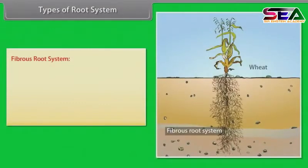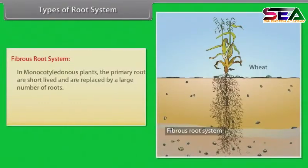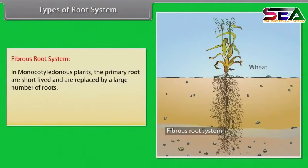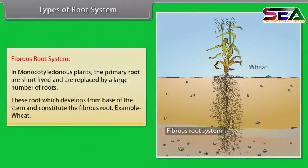Fibrous root system. In monocotyledonous plants, the primary roots are short-lived and are replaced by a large number of roots. These roots, which develop from the base of the stem, constitute the fibrous root. Example: wheat.